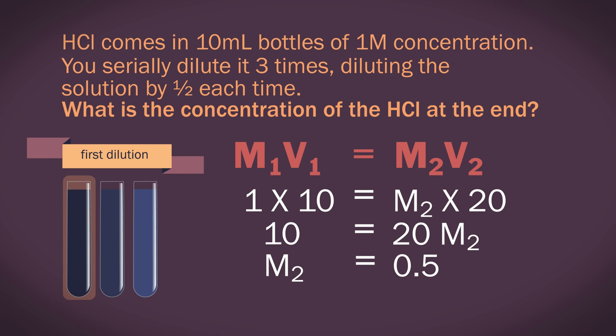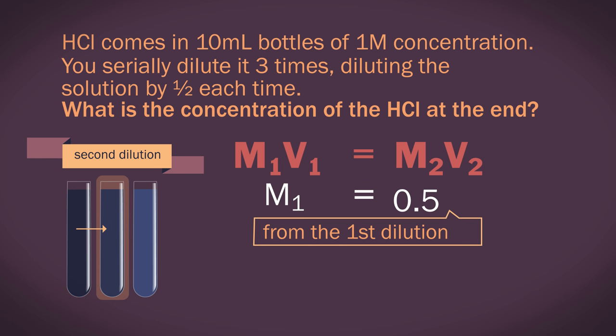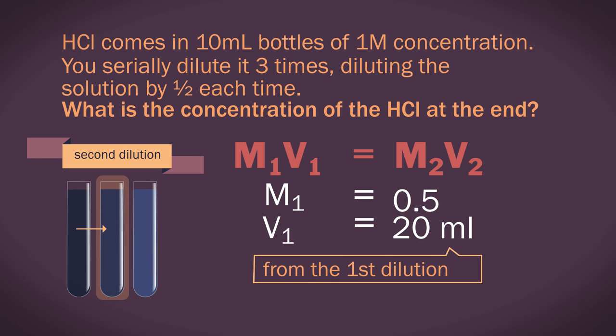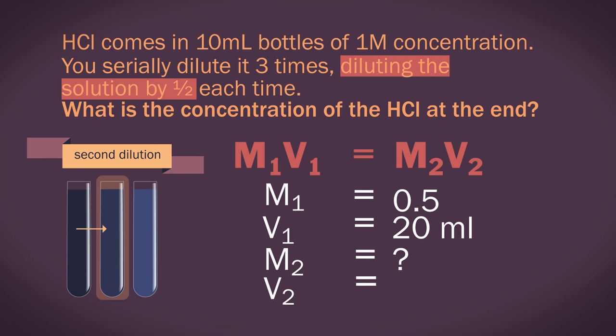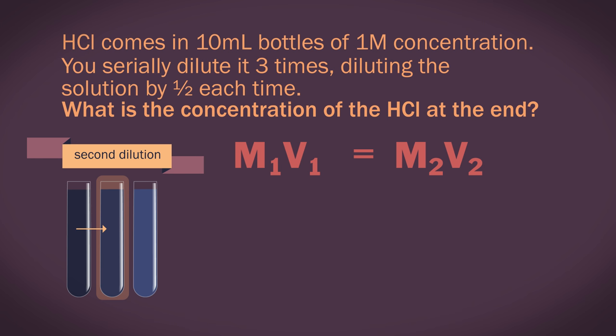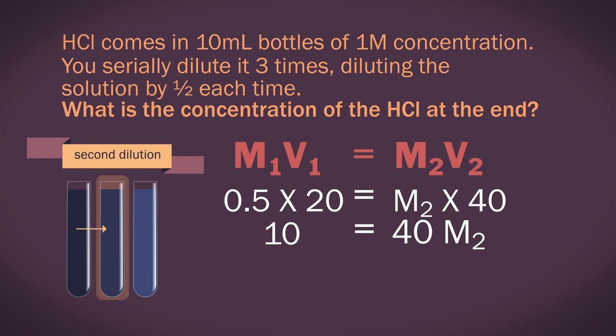Now on to our second dilution. M1 equals 0.5, V1 equals 20 mL, M2 we do not know, and V2 equals 40 mL, because we have already added 20 mL of water to dilute it by half again. Substitute in these values and we get 0.5 times 20 equals M2 times 40. So 10 equals 40M2, and rearranging means M2 equals a quarter.